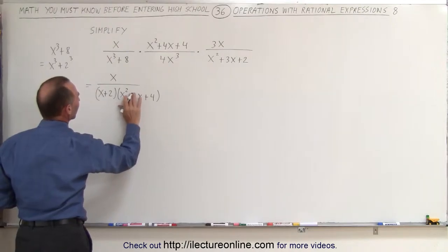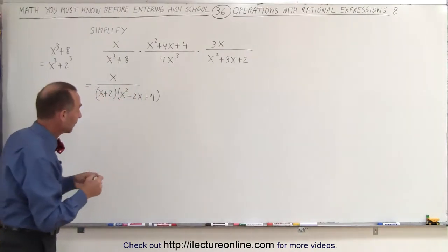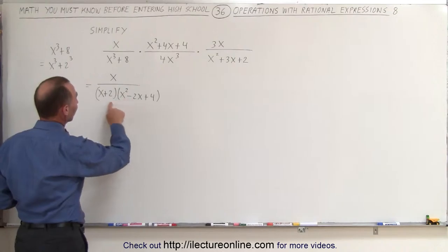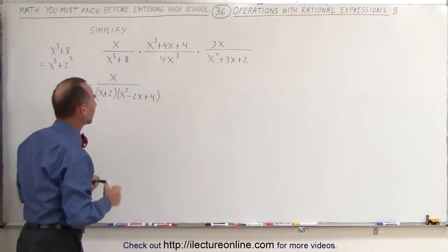And this becomes a minus sign. Otherwise, it doesn't work out. So you can see that when you multiply these together again, you'll end up with this denominator right here.